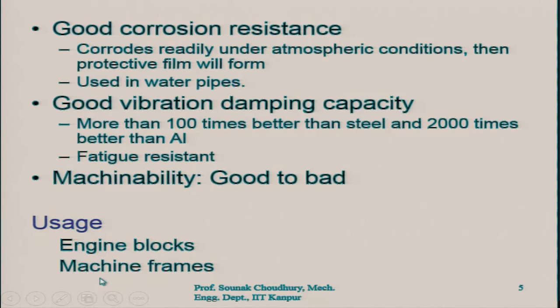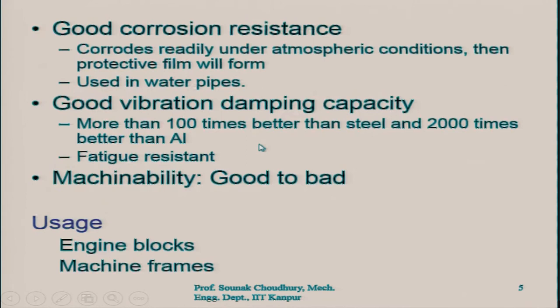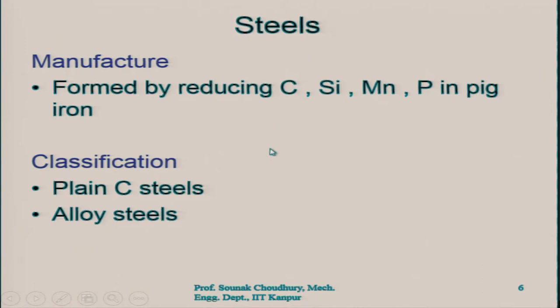Next is steel, where as I said the percentage of carbon — in the case of cast iron it is 3 to 4 percent — in the case of steel it is less than 2 percent. Therefore steels are produced by reducing the percentage of carbon, silicon, manganese, and phosphorus in the pig iron. Pig iron from the blast furnace has certain composition — reducing those compositions gives us steel.